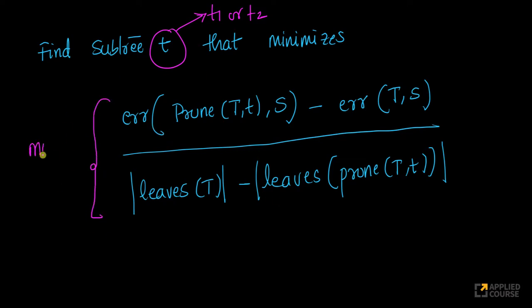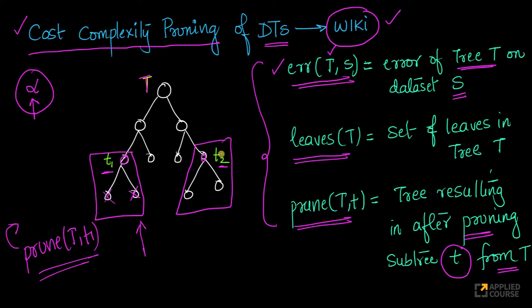Now, let's see what this expression is trying to do. You want to find that subtree t which minimizes this expression. Now, what is this expression saying? Look at this. This first part here, this is the error that you will get after pruning tree t. Look at this, this is prune(T,t). Let's take our example. We have to choose between t1 and t2.